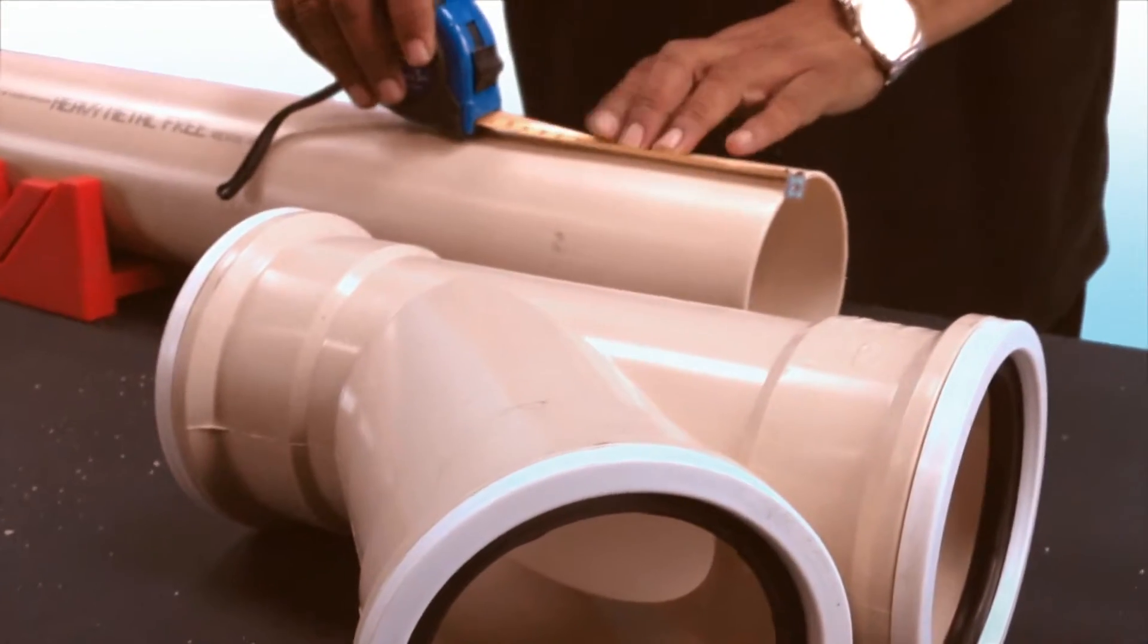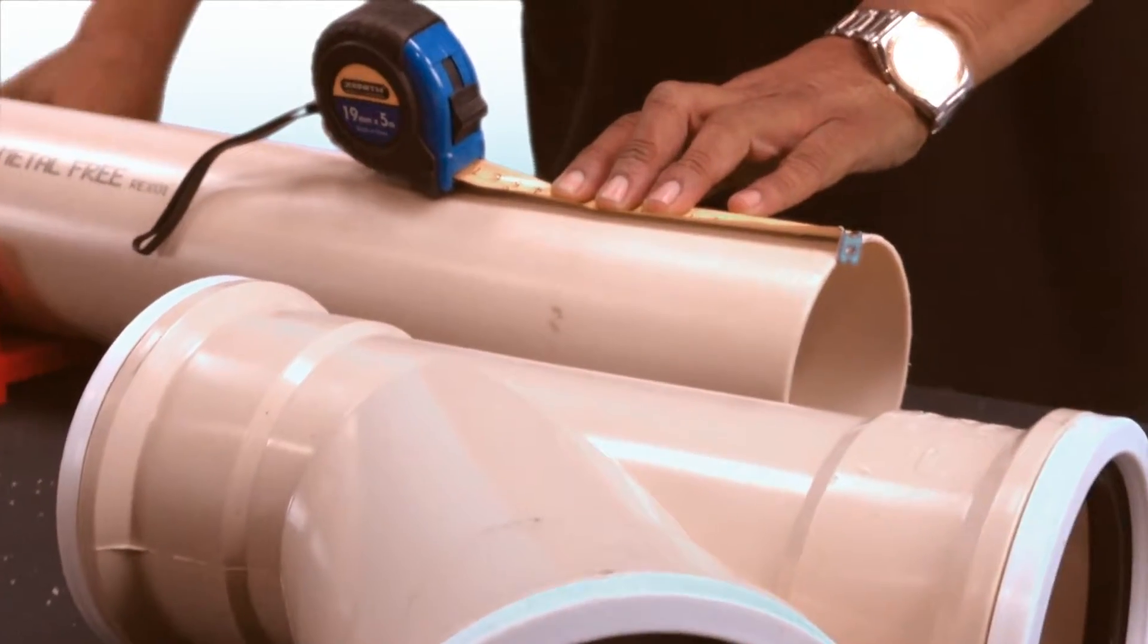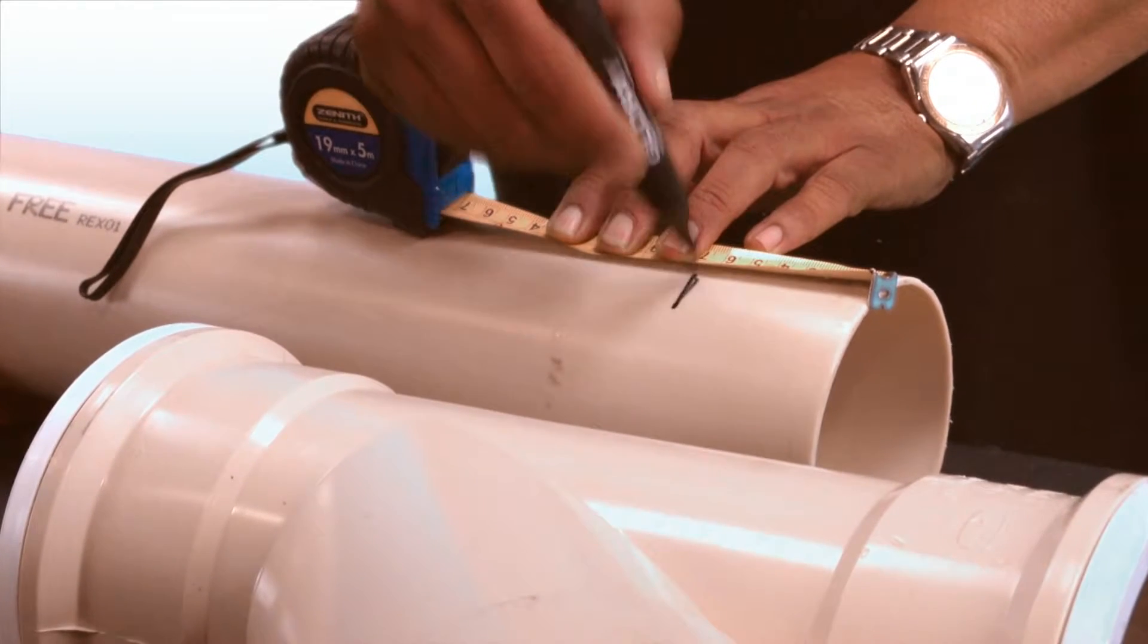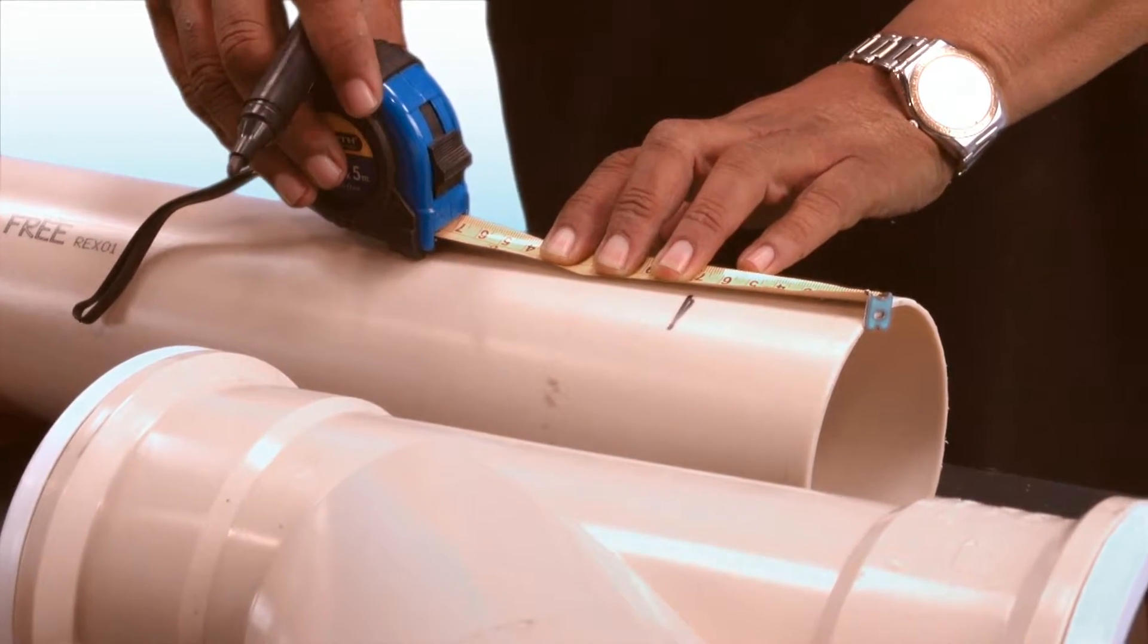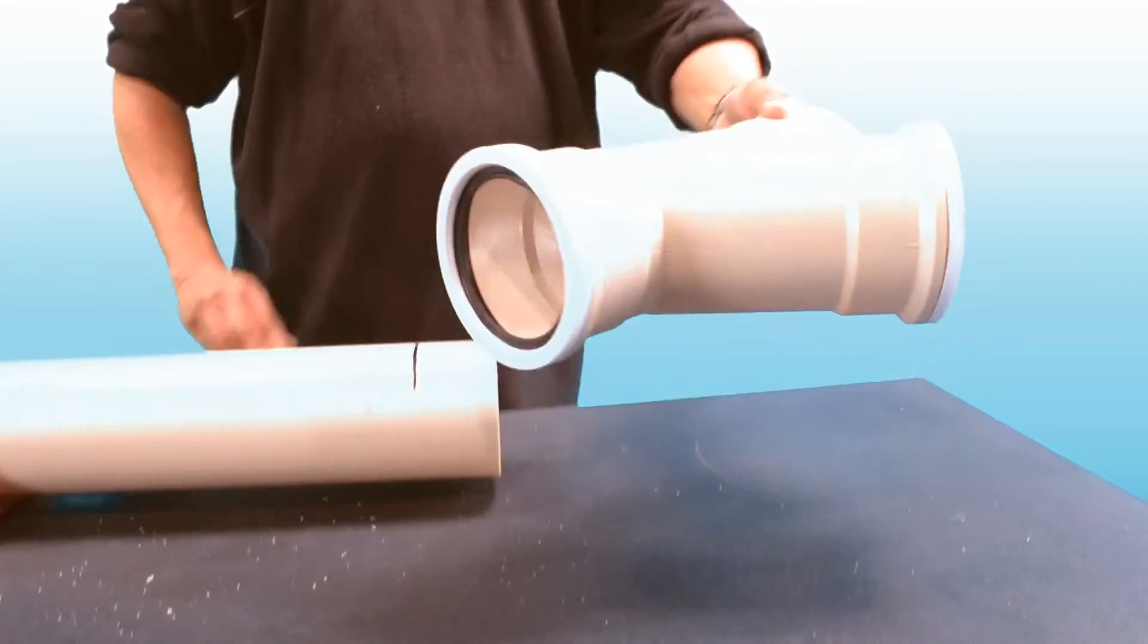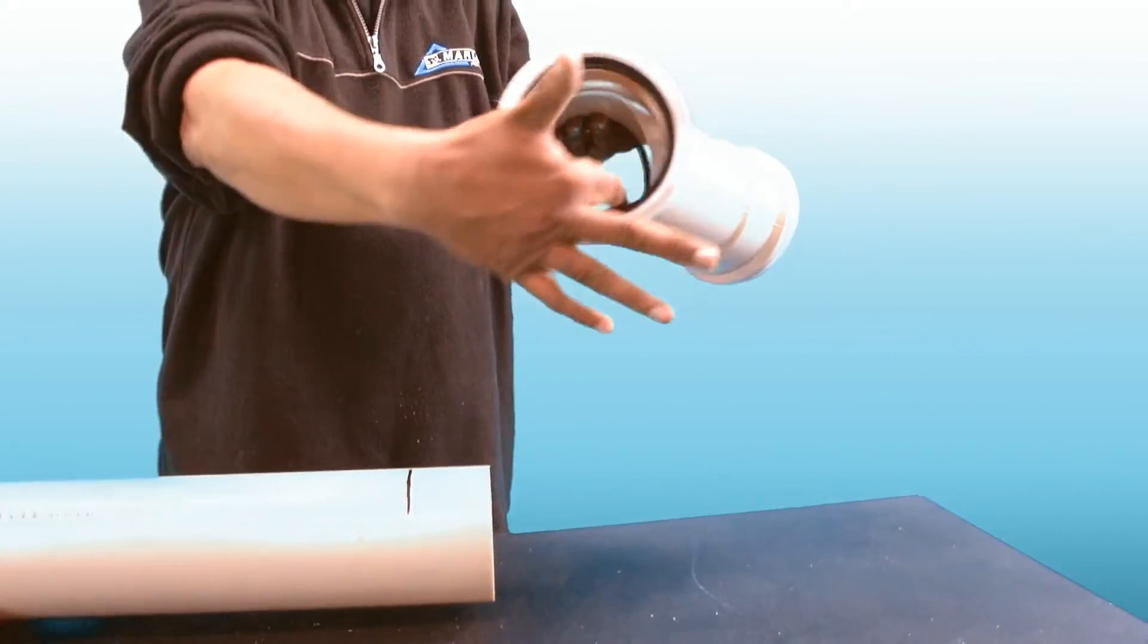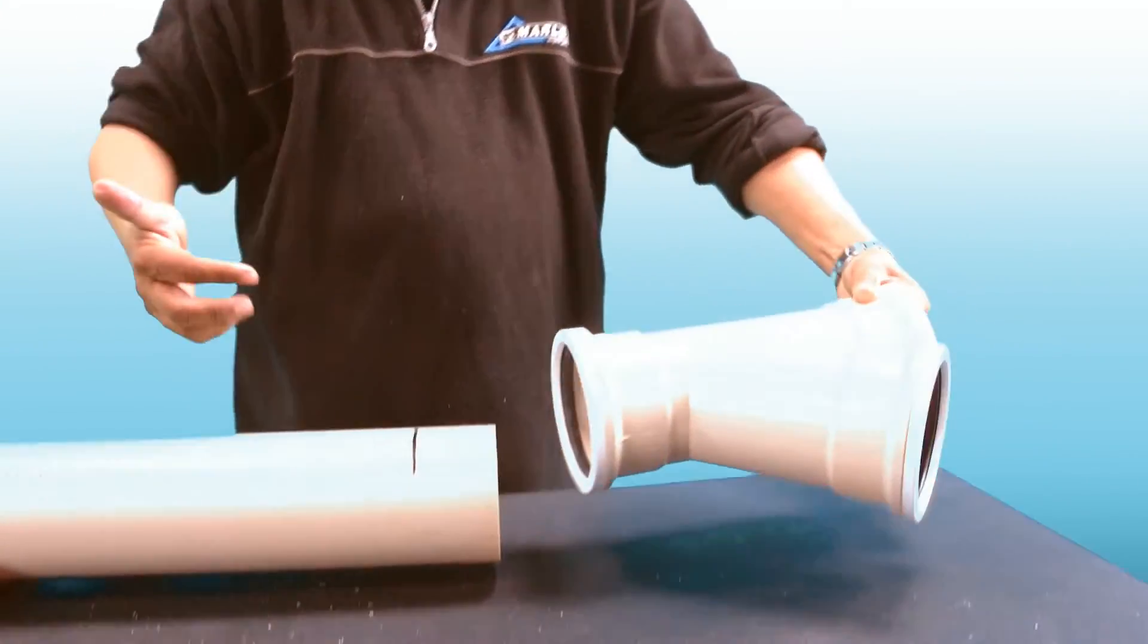First, determine the insertion depth and mark it with a permanent marker. Ensure that the rubber seal ring is correctly positioned in the socket recess of the fitting or the pipe socket.